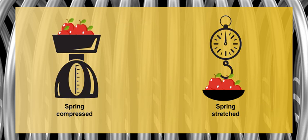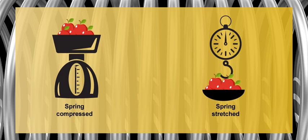Scales for measuring weight use springs. With the scale on the left, placing the fruit on the scale compresses the spring. With the scale on the right, the weight of the fruit stretches the spring. In both cases, the amount the spring is compressed or stretched is a direct indicator of the weight.